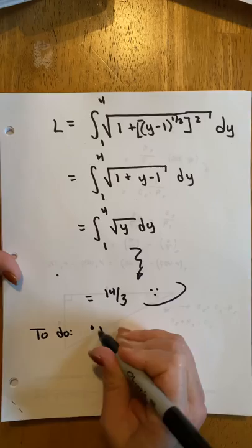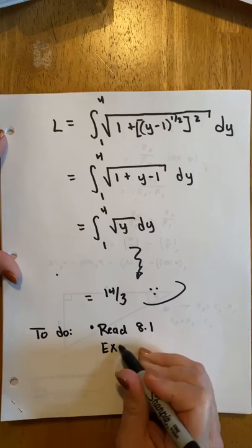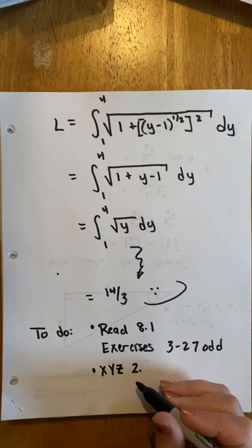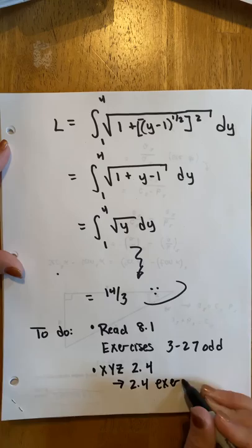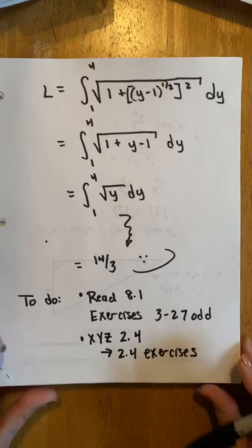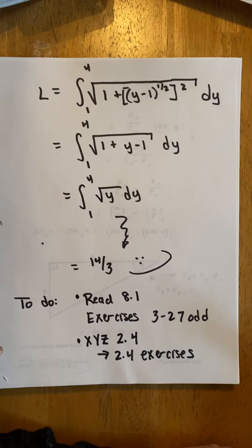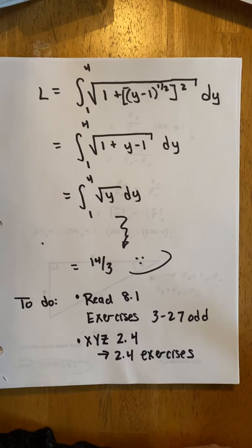You want to be awesome integrators. So to do, after watching this lecture, read 8.1 exercises. 3 to 27 odd are all good to choose from. XYZ 2.4. Then the 2.4 exercises. Remember, XYZ exercises are replacing your quiz. Not replacing. They're going to replace the second half of your quiz grade. So I'll use the first half of your quizzes. And then the second 100 points will be based off of your XYZ homework. I posted office hours online. So the virtual office hours are for your class only. I will not be mixing my classes during my office hours. I thought it could get too complicated.